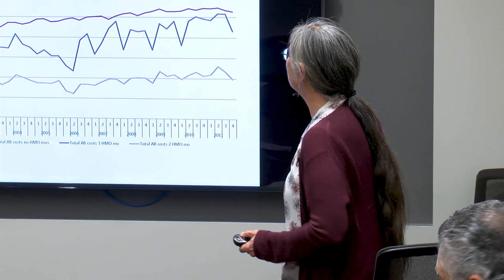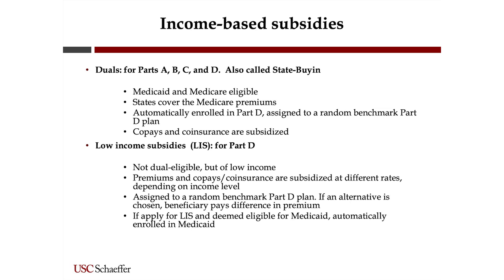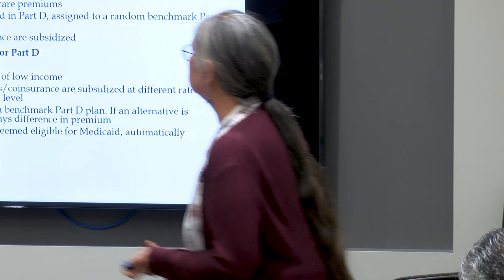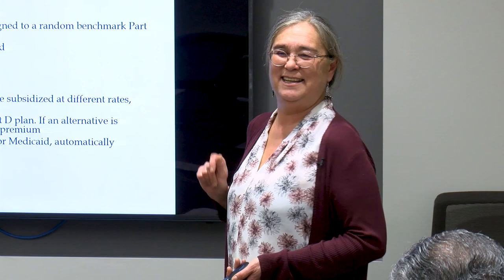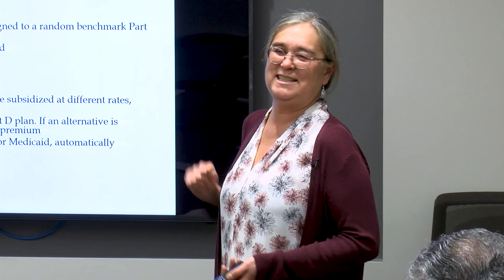There are income-based subsidies. First, there are the dual eligibles — people eligible for both Medicare and Medicaid. States cover the Medicare premiums including Part D. Duals are automatically enrolled in Part D and assigned to a random benchmark Part D plan when they first enroll. If they ever make a selection of a particular plan or switch plans, they will not be randomly assigned ever again, which actually works to their detriment because most people leave money on the table if they don't shop every year.